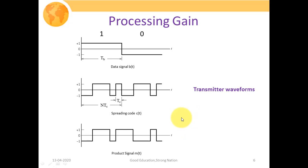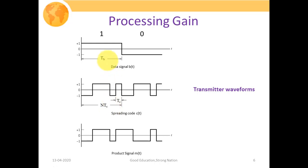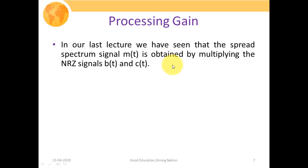Processing gain is denoted as GP and equals the bandwidth of the spread spectrum signal divided by the bandwidth of the unspreaded signal. In the baseband model from our last lecture, the spread spectrum signal M(T) is calculated as the product of the data signal B(T) with the spreading code or chipping sequence C(T). Here TB denotes the bit duration and TC denotes the chipping duration, and in one complete TB duration there are N chipping sequences, giving the relationship TB = N × TC.